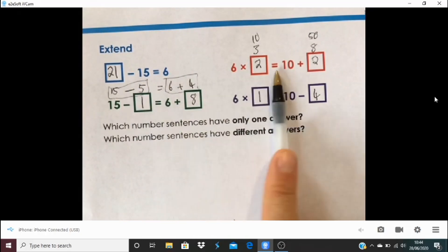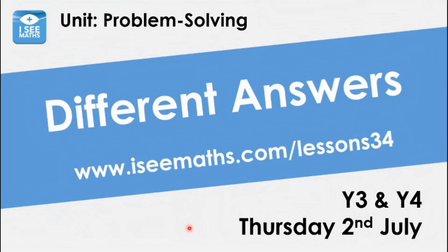Today we're building on where we got to yesterday, using those equal signs and those unequal signs — the greater than and less than signs. It's called 'different answers' today because we're going to look at different number sentences and think: when is there only one answer, and when can there be different answers? The challenge is not to find how many answers, but to ask — is it possible to find different answers in a given number sentence?